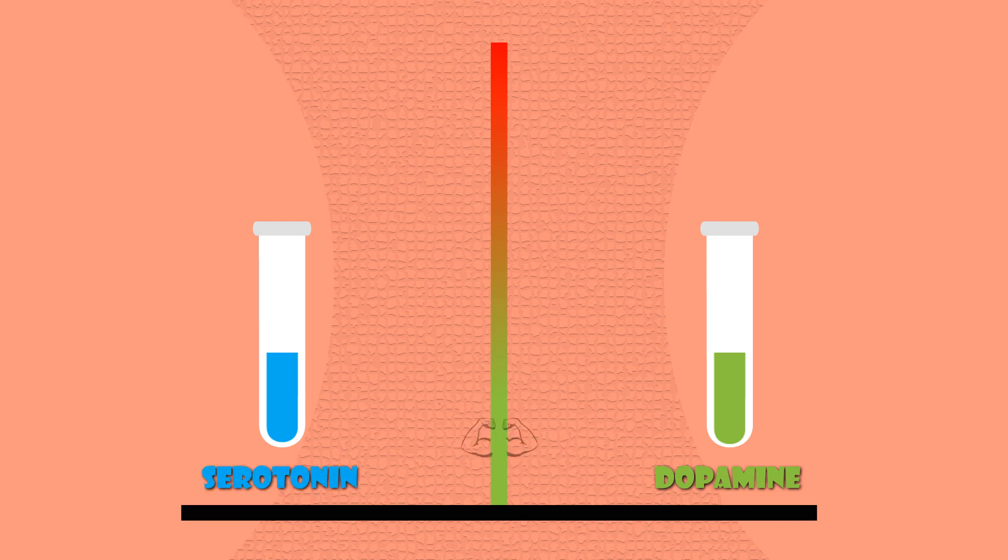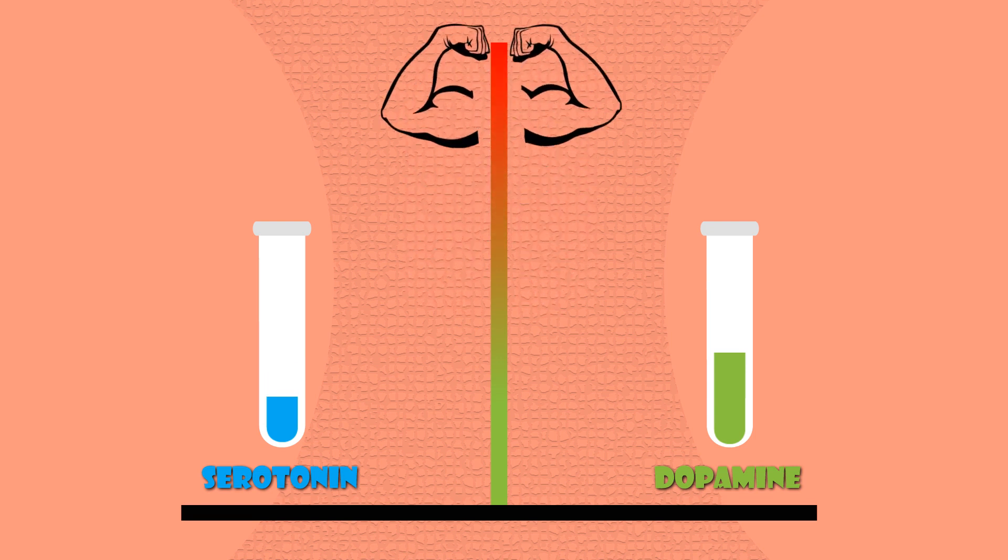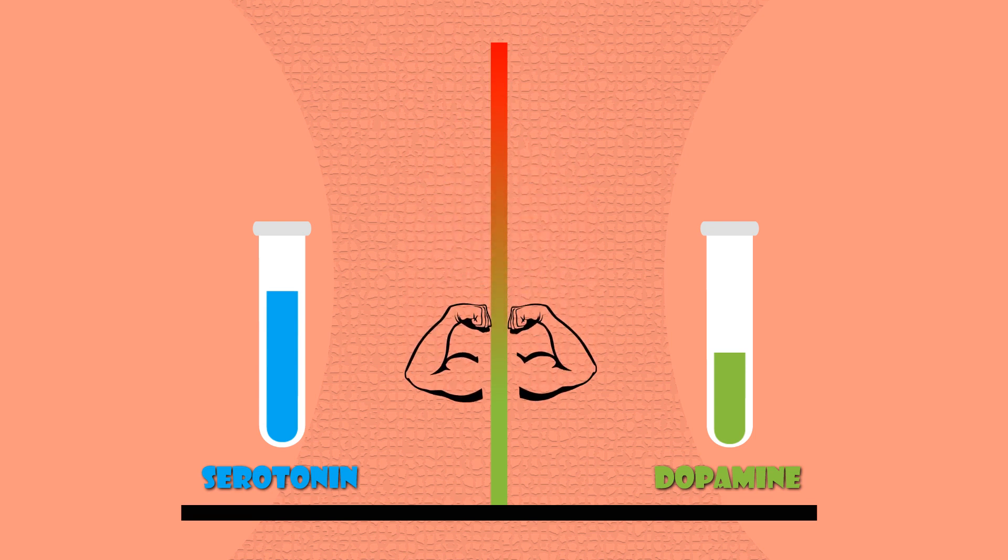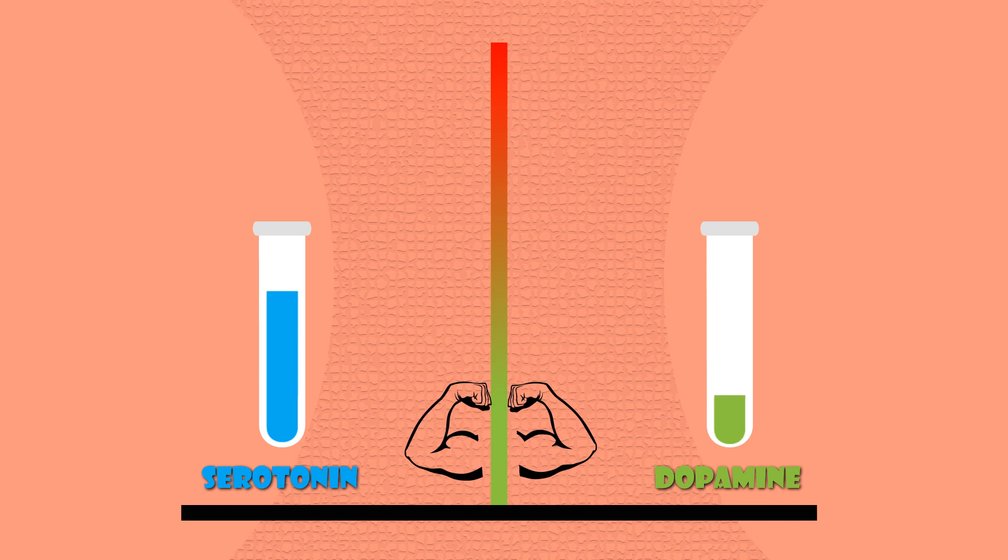Dopamine and serotonin work together, but sometimes in opposite ways. If we look at motivation, for example, they both influence it but in different ways. Low serotonin levels cause people to act, but when high levels of serotonin are achieved, motivation is lost. In contrast, low levels of dopamine cause low motivation, and high levels of dopamine cause an even higher craving for dopamine stimulus.